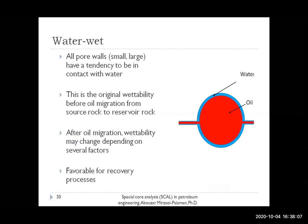In water-wet systems, all pore walls — either small or large — have a tendency to be in contact with water. This is the original wettability before oil migration from source rock to reservoir rock. In some situations, when oil migration happens, oil does not change the wettability and it remains water-wet. This kind of wettability is favorable for recovery processes because the rate of recovery is high — oil is the non-wetting phase, moves through the larger pores, has higher relative permeability, causing higher oil recovery rates. Also, residual oil saturation is not very high, because the fluid attached to the solid is water, not oil.